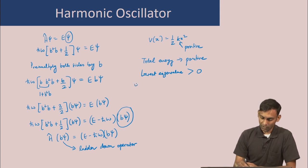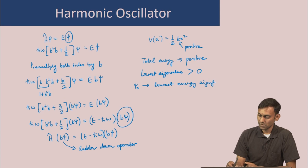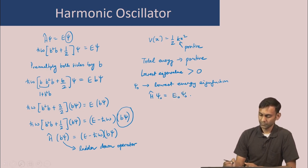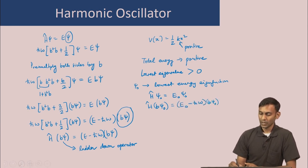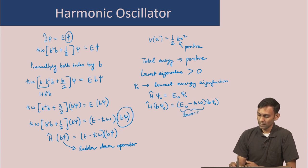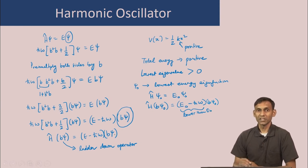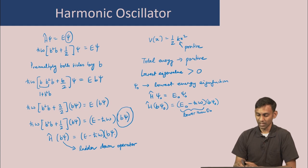Suppose ψ₀ is the lowest energy eigenfunction, so H·ψ₀ = E₀·ψ₀. We have seen that b·ψ₀ is also an eigenfunction with eigenvalue E₀ − ℏω, which implies there is another eigenfunction with energy lower than E₀. This is a contradiction: on one hand ψ₀ is the lowest energy eigenfunction, and on the other hand b·ψ₀ appears to have energy lower than E₀.